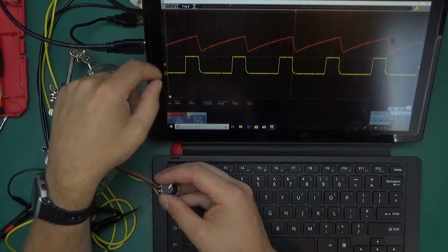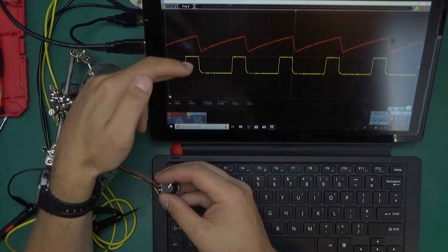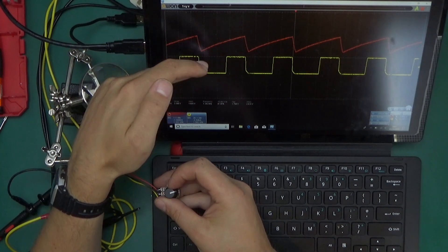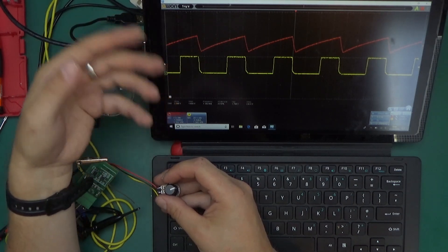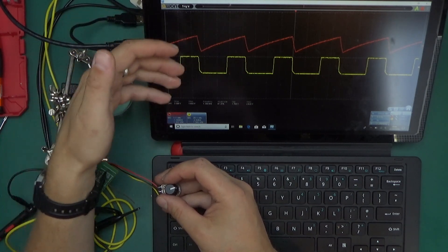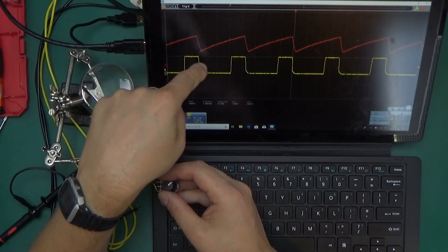And in its fully on state, dissipating very little power, because its RDS on resistance is very, very low. This particular MOSFET is specially designed for switching like this. Most of the power loss happens during the switching time.